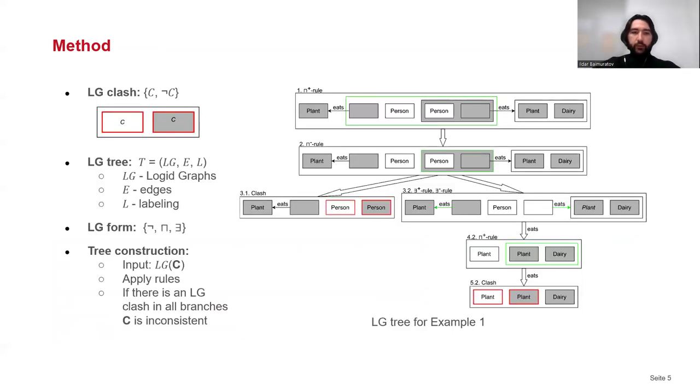The reasoning procedure can be represented as a tree that starts with logic graphs for the original concept. At each step, we apply some reasoning rules until it's possible, and if in the resulting tree in each branch there is a contradiction, the original concept is not satisfiable. In this way, we can step-by-step trace back the sources of contradiction.